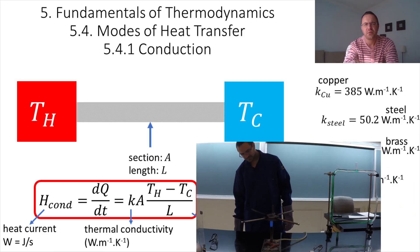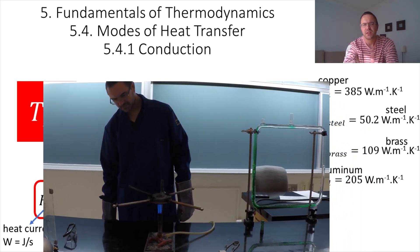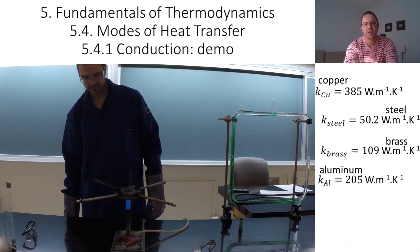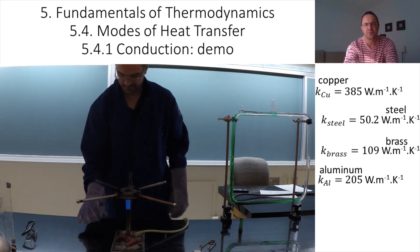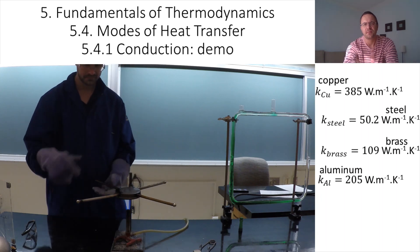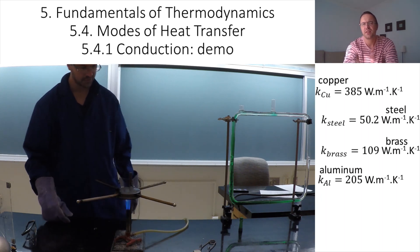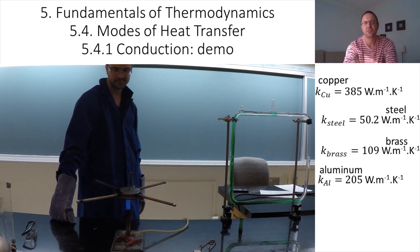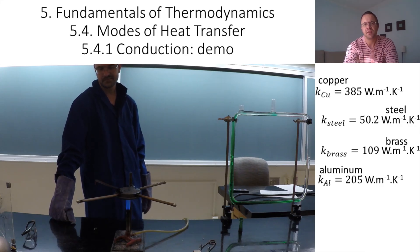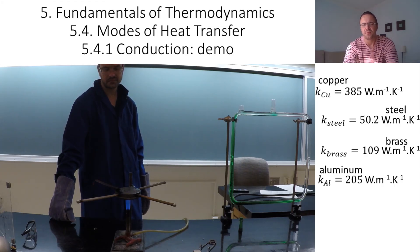Now let's come back to the demo. While I was speaking, the conduction of heat was taking place. You see one of the ball bearings just dropped. It is the one that was attached to the copper rod. This is in fact expected because copper has the largest coefficient of thermal conductivity, so the heat current will be the largest. That means it will take less time to transfer energy to the colder end of the rod. Based on this, you can already guess which one will be the next ball bearing to drop.